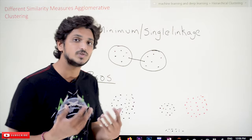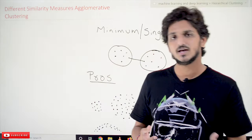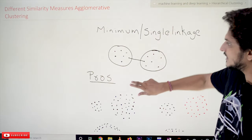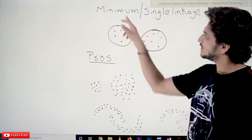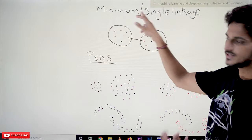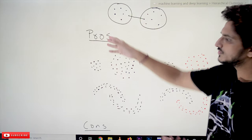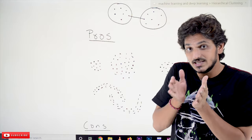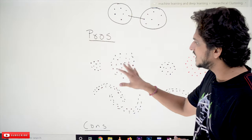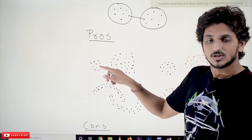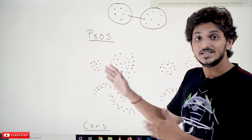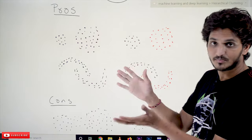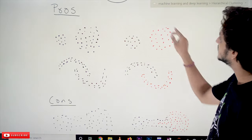Now we will understand the positives and negatives of minimum (single linkage), maximum (complete linkage), group average, and Ward's method. Starting with minimum, or single linkage — the positive is that it works well when there is a clear separation between the clusters. For example, this is one cluster and this is one cluster. There is a clear separation between them. In this type of situation the minimum method works fine, identifying the clear separation.